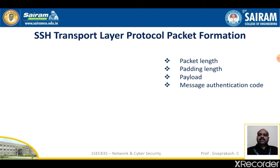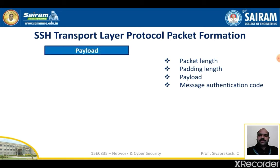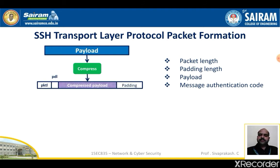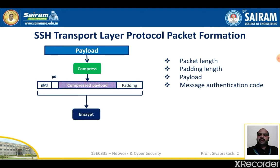Let's see how the transport layer protocol creates the packet format, which consists of four different fields: packet length, padding length, payload, and message authentication code. The payload is present, which is compressed to provide a compressed payload. Along with that, packet length, padding length, and padding are added. The header consists of packet length and padding length. The compressed data is then encrypted — all the data is encrypted.